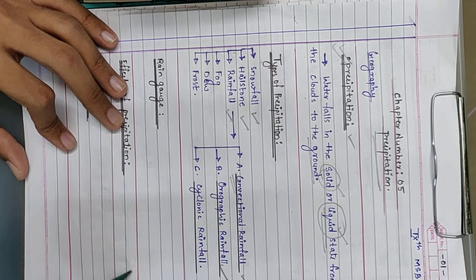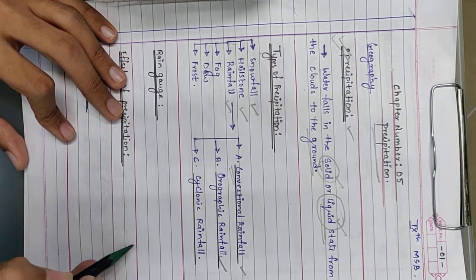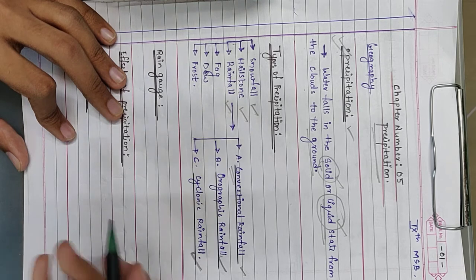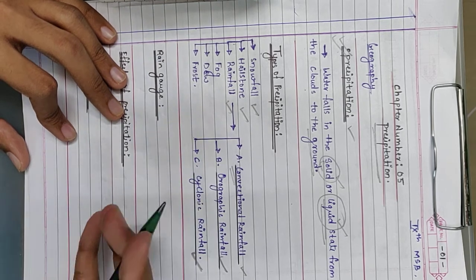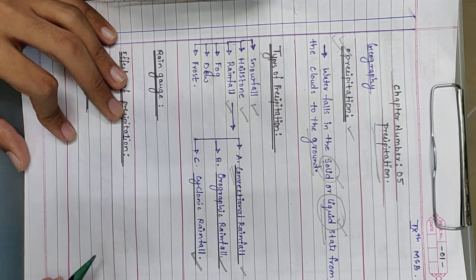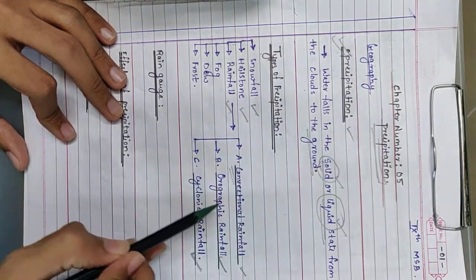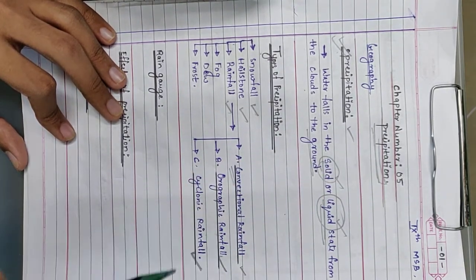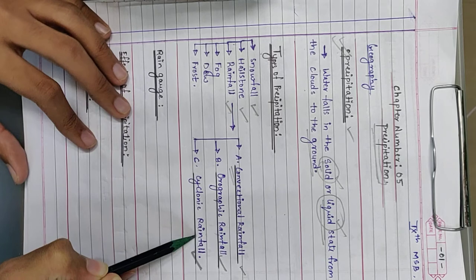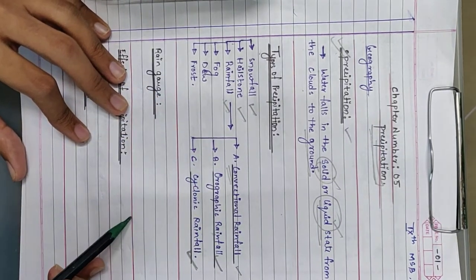Second is orographic type of rainfall, this is something new for you all. Next to orographic is cyclonic rainfall. You have heard about cyclones, but cyclonic rainfall and how it occurs, you haven't studied yet. So today we start chapter 5 where we will study conventional rainfall, orographic rainfall, and cyclonic rainfall. There are three major types of precipitation: snowfall, hailstone, and rainfall.